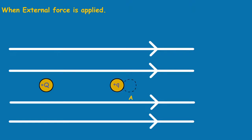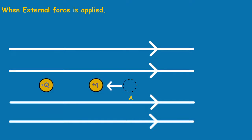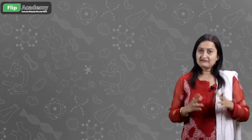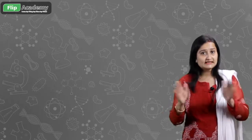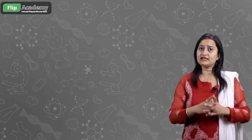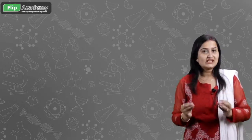F_ext is sufficient to overpower and counter the repulsive electric force, moving the test positive charge from point A to point B. When the charge moves from one point to another, there must be some work done. This work done is stored in the test positive charge in the form of potential energy.